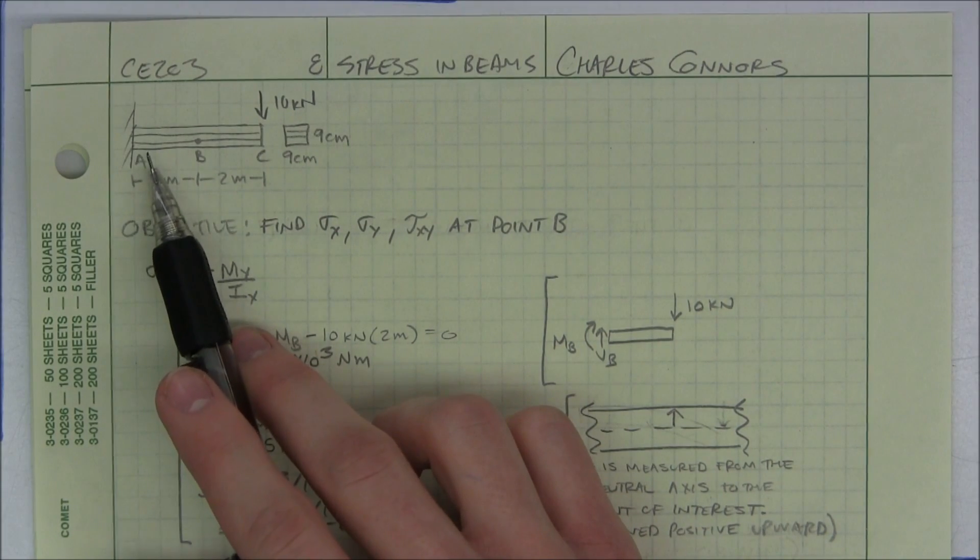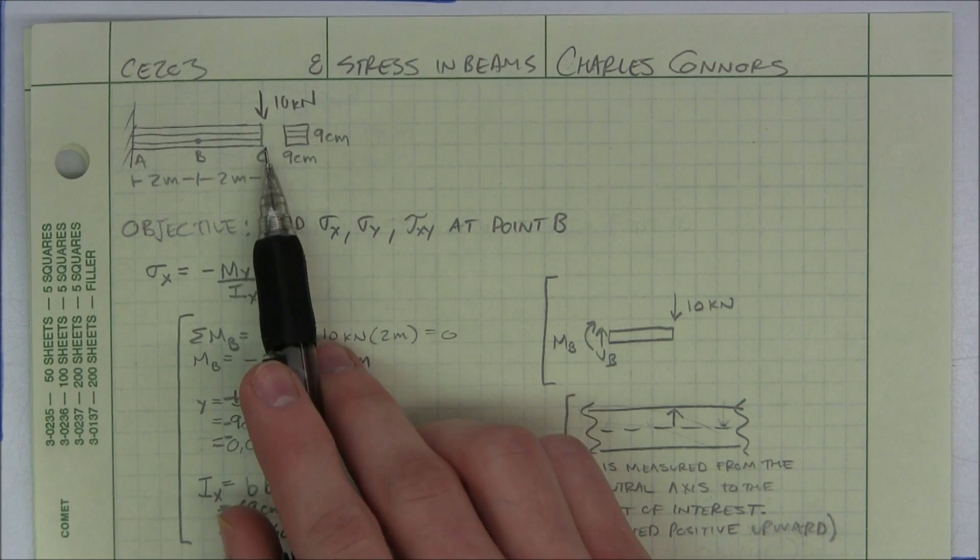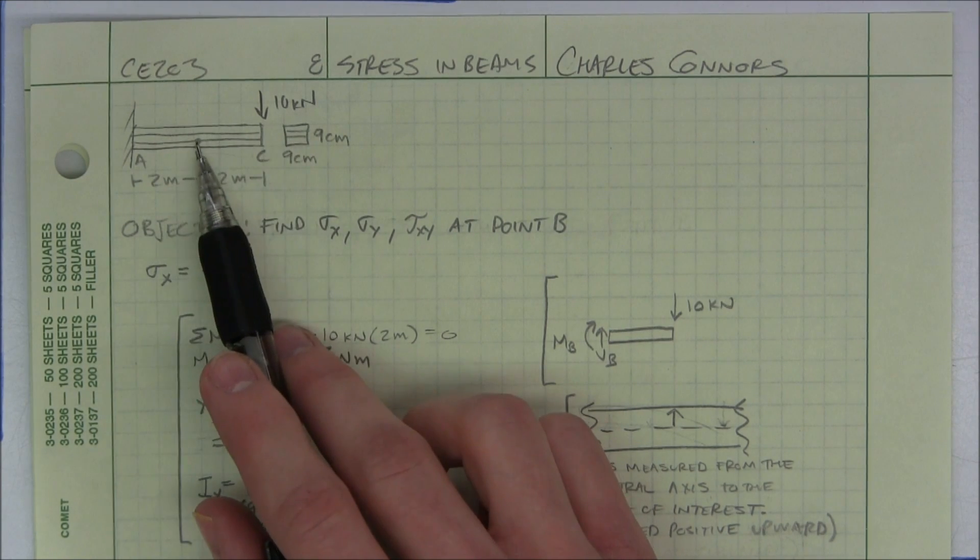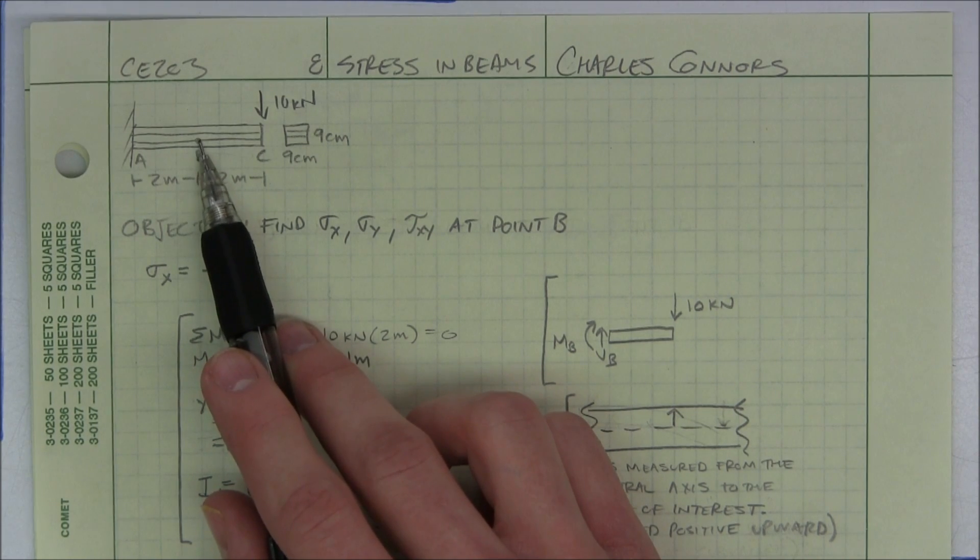So for this problem, we have a cantilever beam which is three separate beams that have been glued together. And we want to know what the stresses are at point B, which is in between two of those beams.